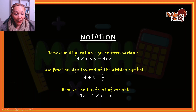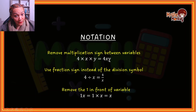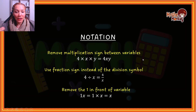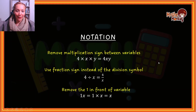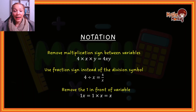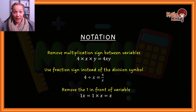Essentially, in 4xy there's an invisible one in front of the x and an invisible one in front of the y. If you have a variable by itself, that actually means there's a one in front of it invisibly, because anything multiplied by one just remains the same. So those are the main basic concepts and understanding you need to have before you can even attempt to do any algebraic calculations.